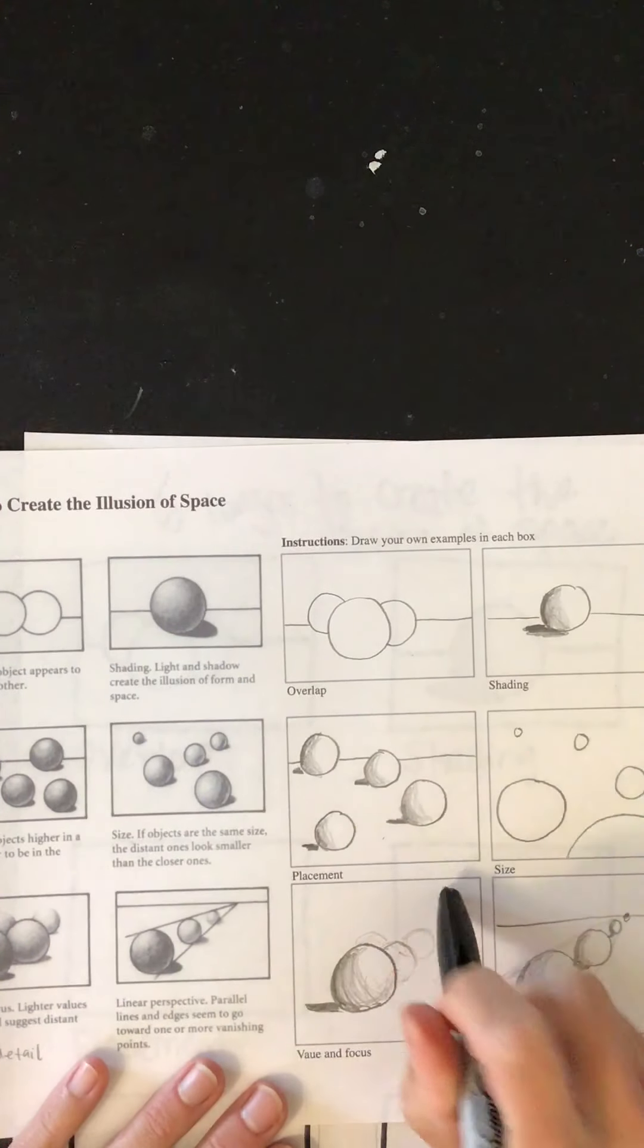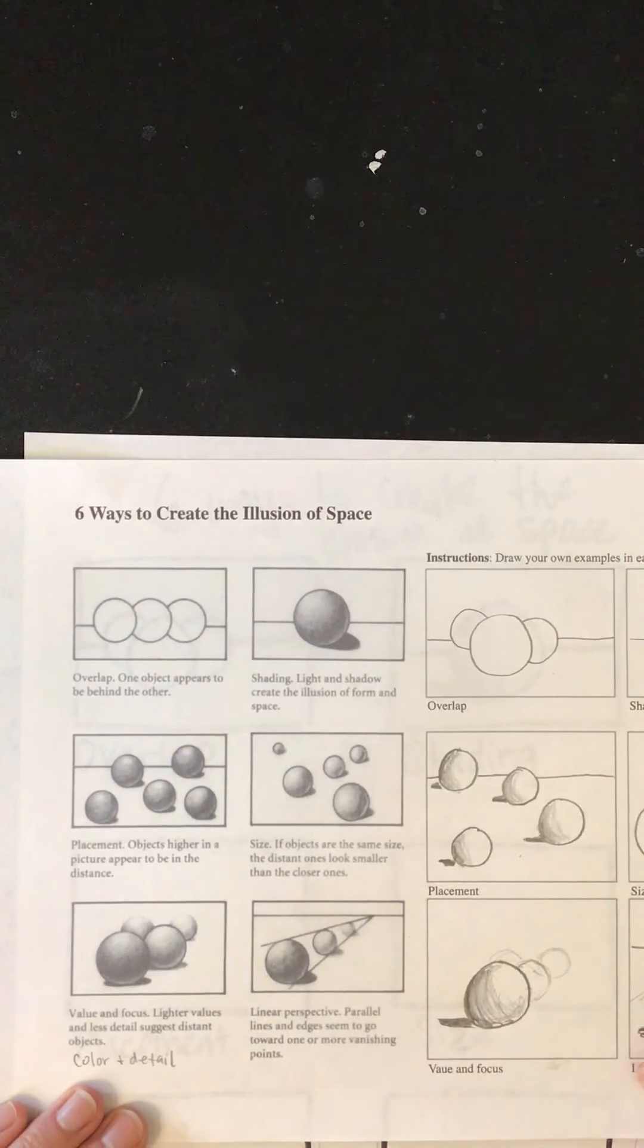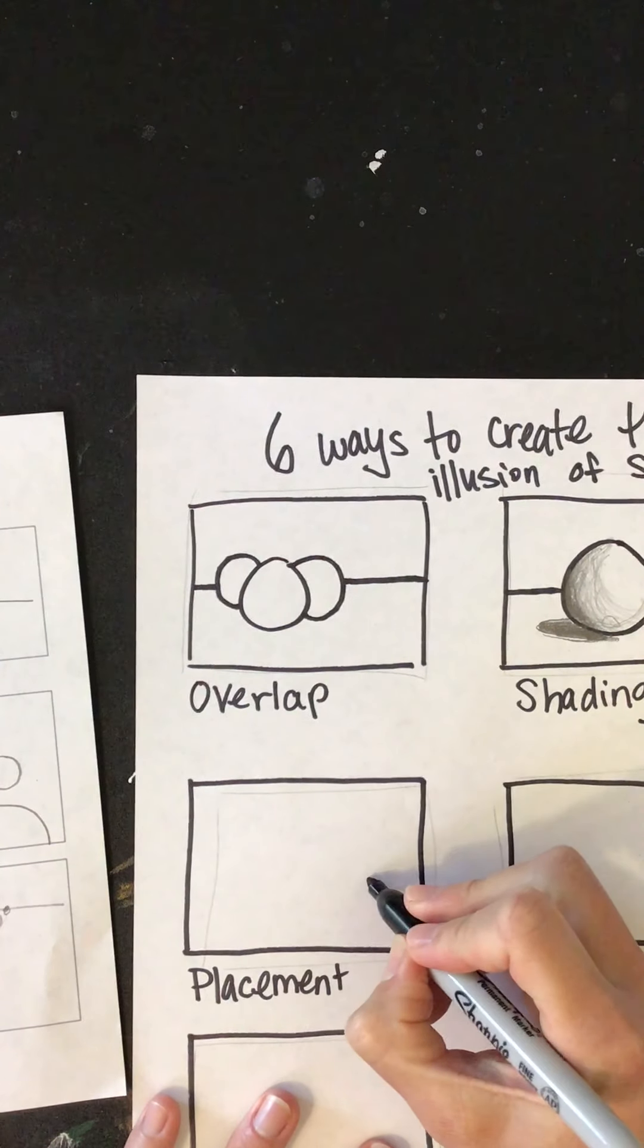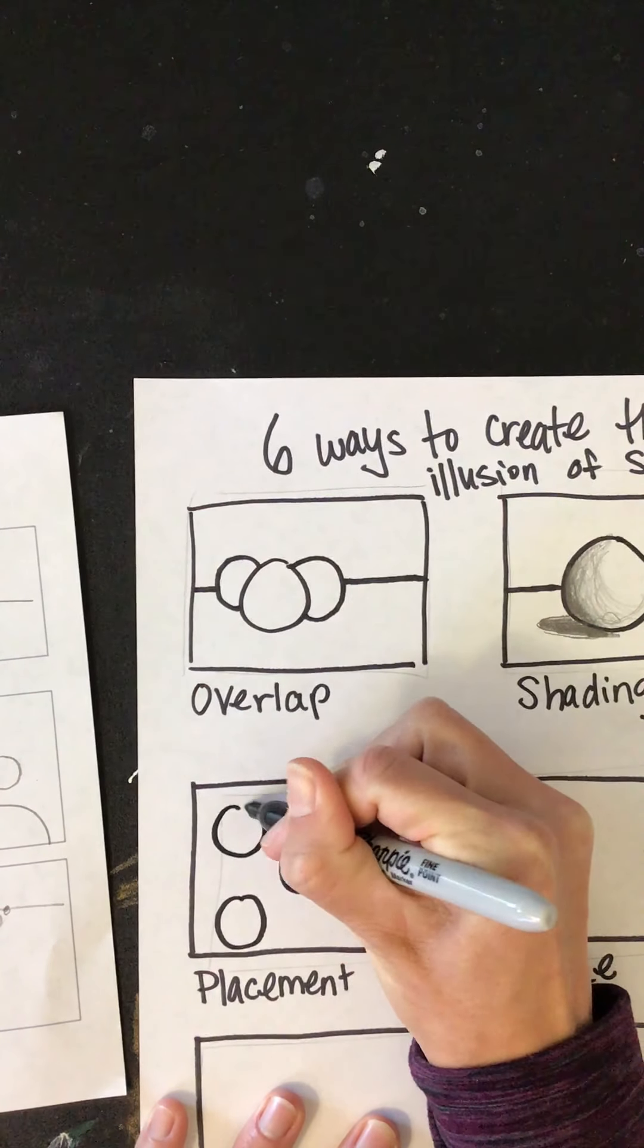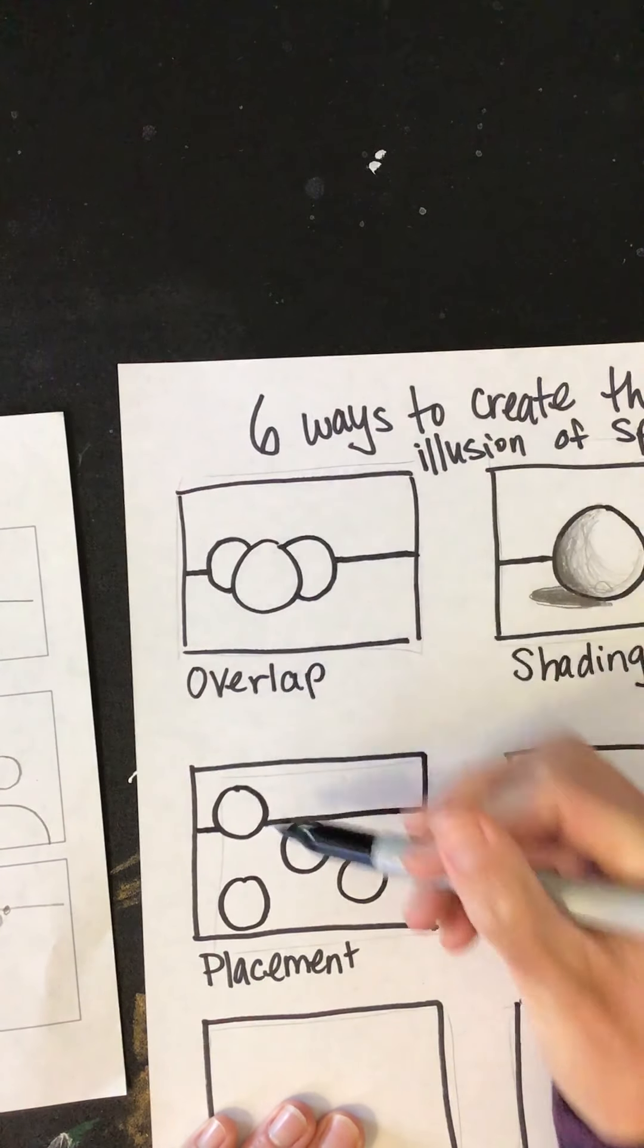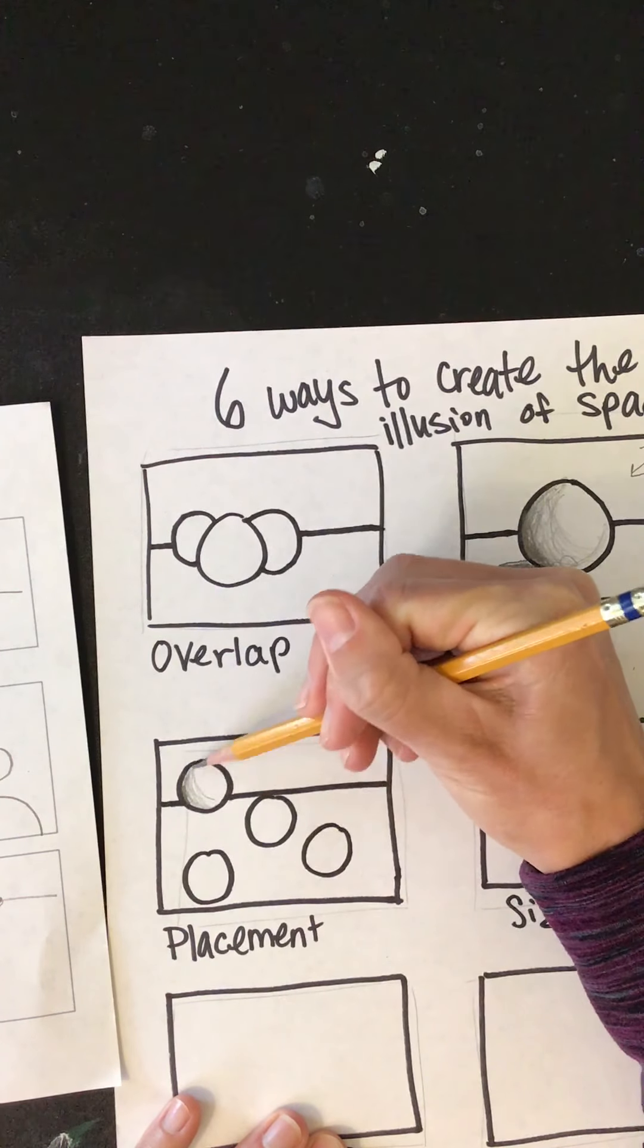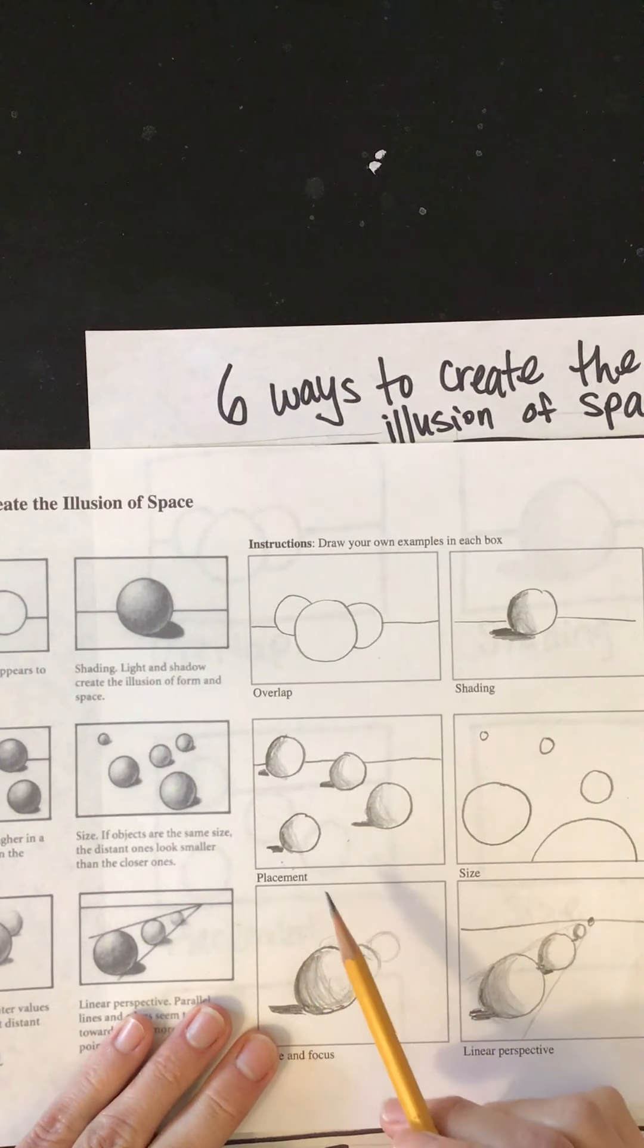Again, you can pause the video if you need to catch up. No worries. So placement is this next one. Objects higher in a picture appear to be in the distance. So it's just the placement of your spheres, or if you want to do other objects, that's fine, relative to where the horizon line is. So to do this one, let's just start drawing some circles. I don't know, maybe three or four, five or so. This one in the back, I'm gonna have the horizon line kind of go right there. All right, so this kind of looks like it's towards the back and these ones are towards the front. Option here, you can go ahead and shade it in for extra practice. I highly recommend doing that. For the sake of making this video shorter, I'm not going to do that right now. But you can see in my little example, I shaded these little guys too. So placement.